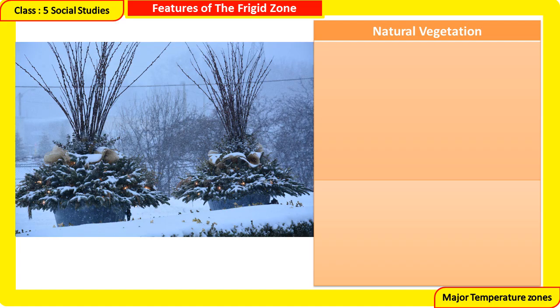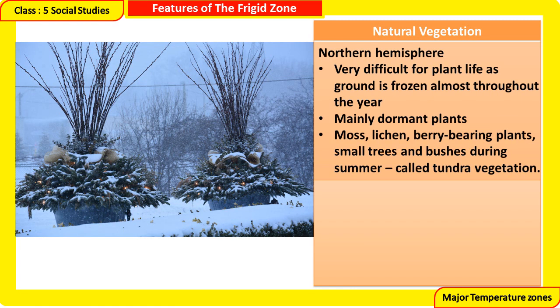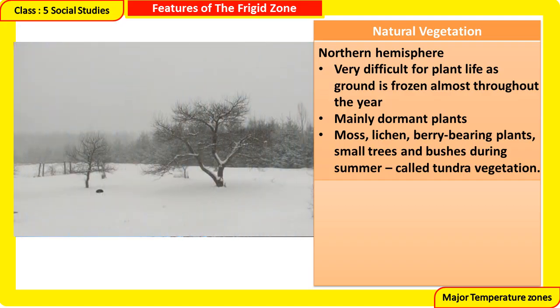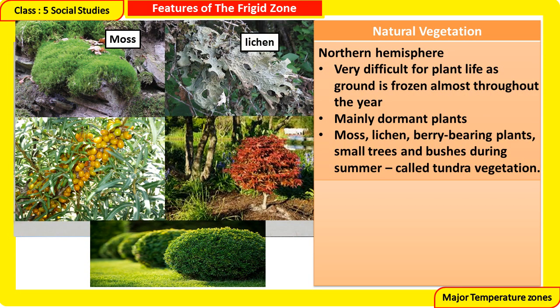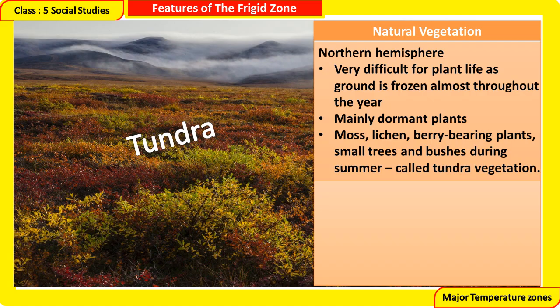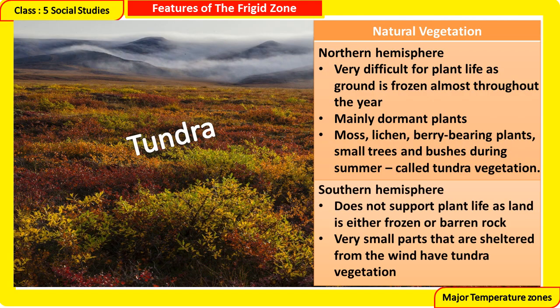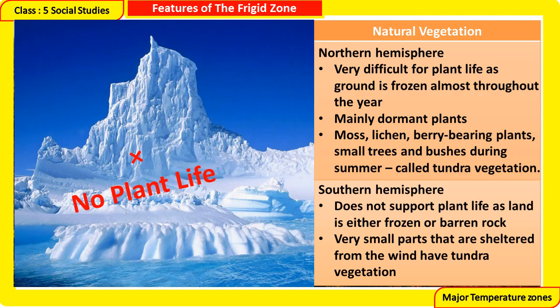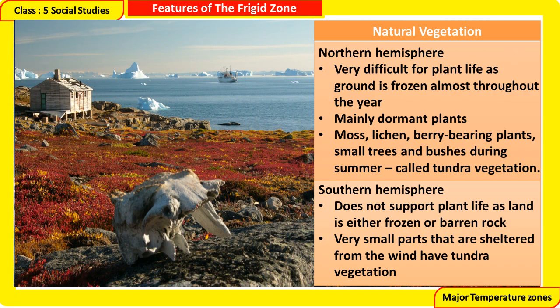Natural Vegetation of the Frigid Zone: Northern Hemisphere — very difficult for plant life as the ground is frozen almost throughout the year. Mainly dormant plants: moss, lichen, berry-bearing plants, small trees, and bushes during summer — called tundra vegetation. Southern Hemisphere — does not support plant life as land is either frozen or barren rock. Very small sheltered parts have tundra vegetation.